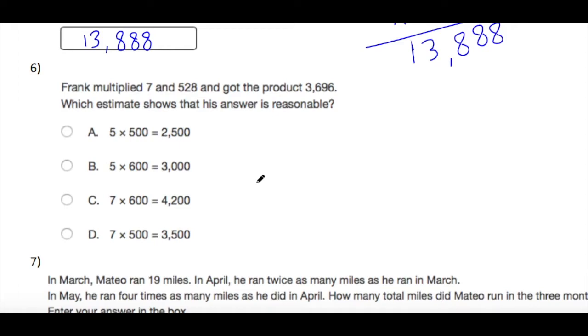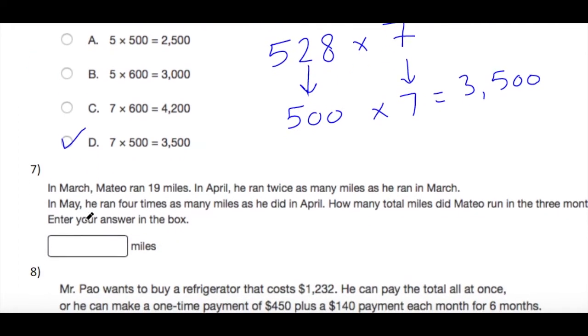Frank multiplied 7 and 528 and got the product 3,696. Which estimate shows that his answer is reasonable? Okay, so we have 528 multiplied by 7. If we use rounding, you will find here this is 500 multiplied by 7, which is 3,500, which is D.